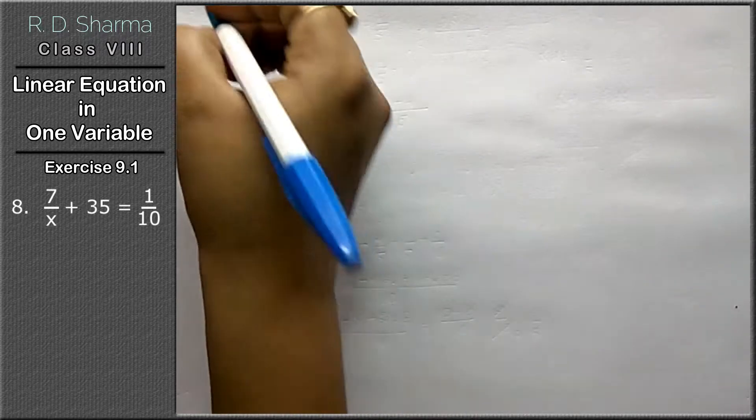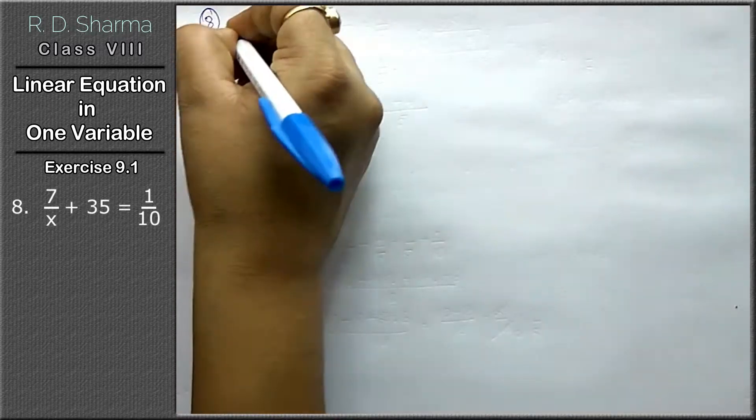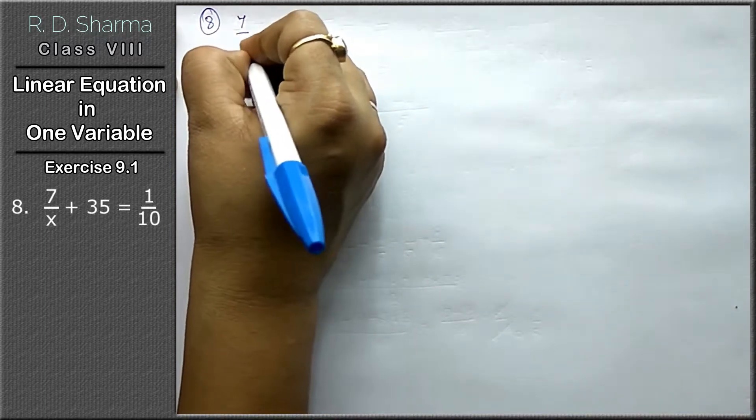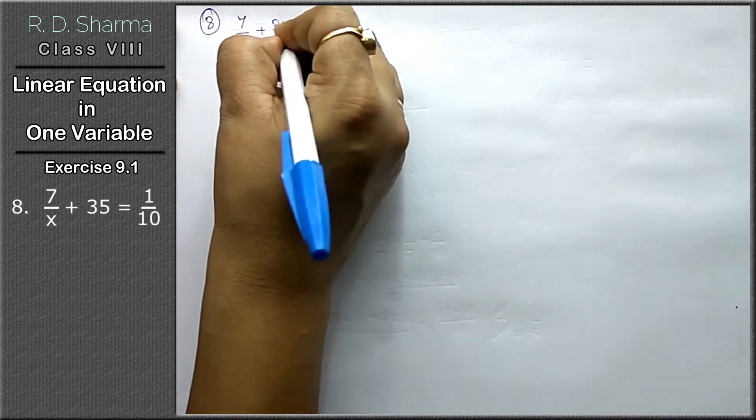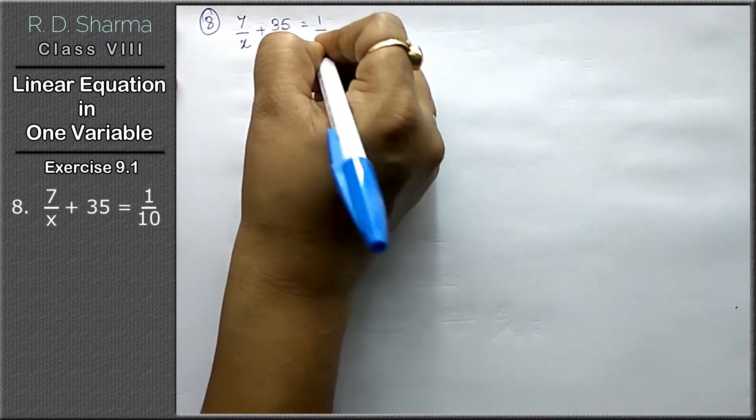Question number 8th: 7 upon x plus 35 equals to 1 upon 10.